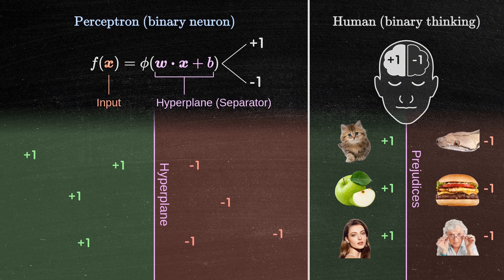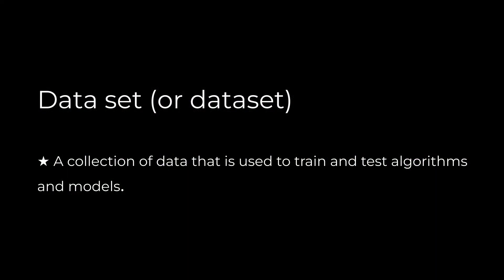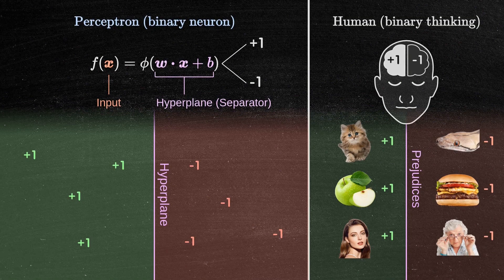This information, in the field of computer science, is known as a data set. Let's explore this concept with an example of the perceptron algorithm in action.